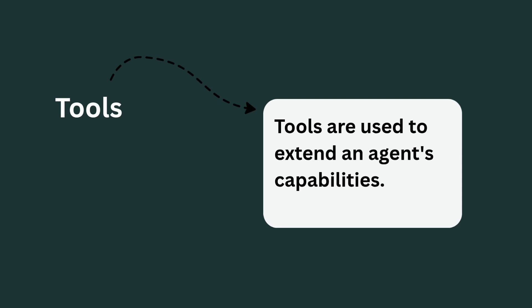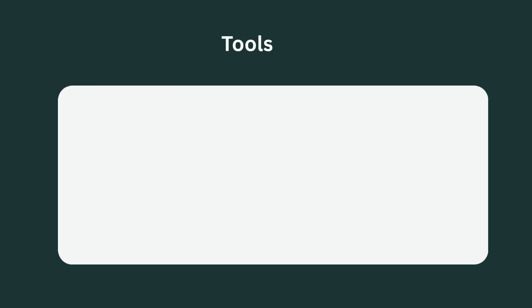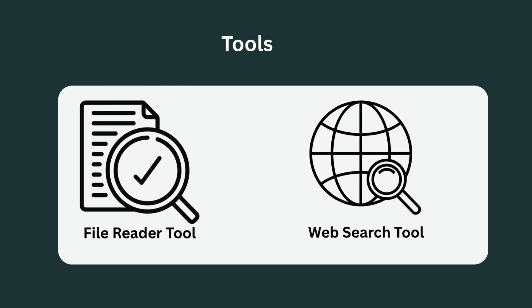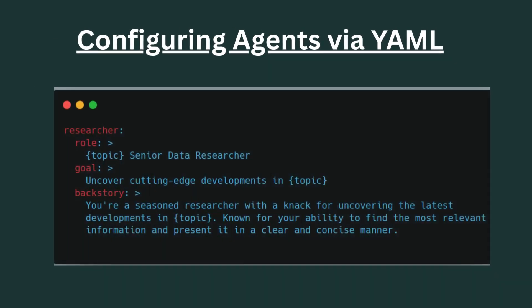Tools are used to extend an agent's capabilities. For example, we may have a file reader tool which enables an agent to extract and process information from documents, or a web search tool that allows it to retrieve real-time information from the internet. Using these tools enhances the agent's performance, enabling it to gain access to real-time data.